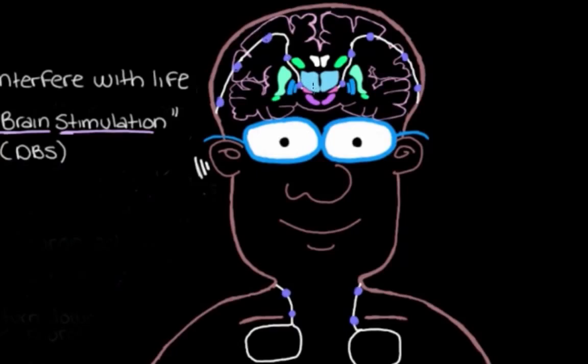And remember that this happens because the subthalamic nucleus, it gets too active. And when it's too active, it overexcites the globus pallidus internal. And when the globus pallidus internal is too excited, it's what inhibits our thalamus too much,